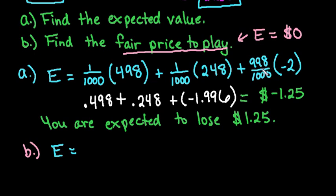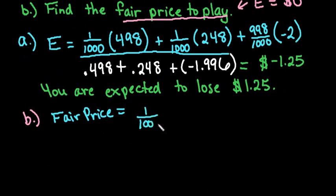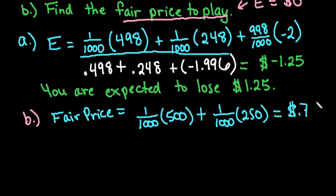So the probabilities always add up to 1, and so if I subtract a value from here and I subtract a value from here, we end up with the fair price to play. So the fair price to play is going to equal this right here, but with the actual values that you have. So we would have 500 and 250, so we would have 1 out of 1,000 times 500 plus 1 out of 1,000 times 250. So this ends up giving us 75 cents. So a fair price to play this game is 75 cents.